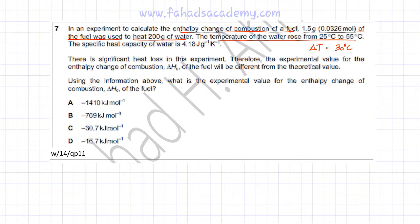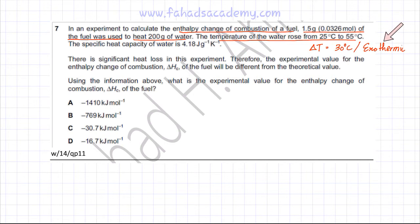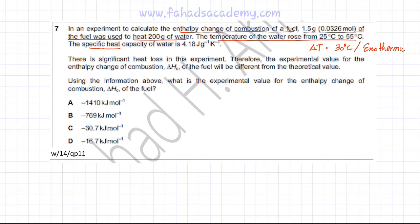Since the temperature is rising, it suggests that it's an exothermic reaction. When doing experimental calculations, always make sure the sign of the energy change is determined. If the temperature is rising, that indicates the reaction is exothermic. The specific heat capacity of water is also given — that's 4.18 joules per gram per Kelvin.